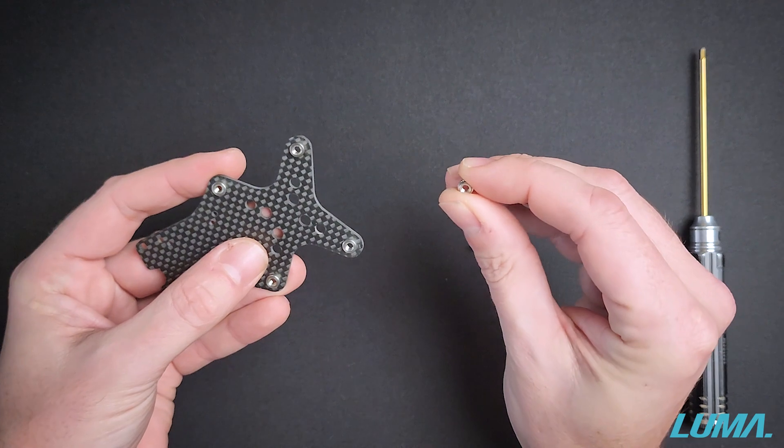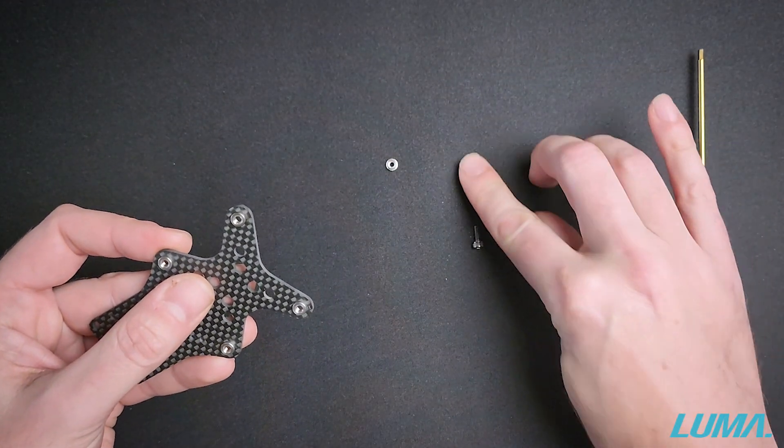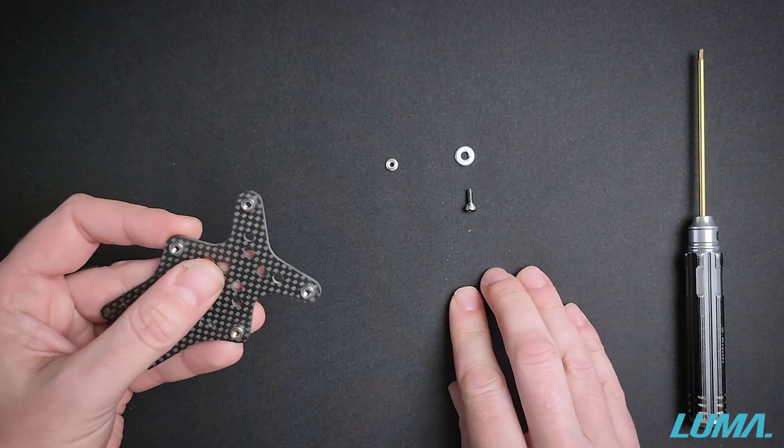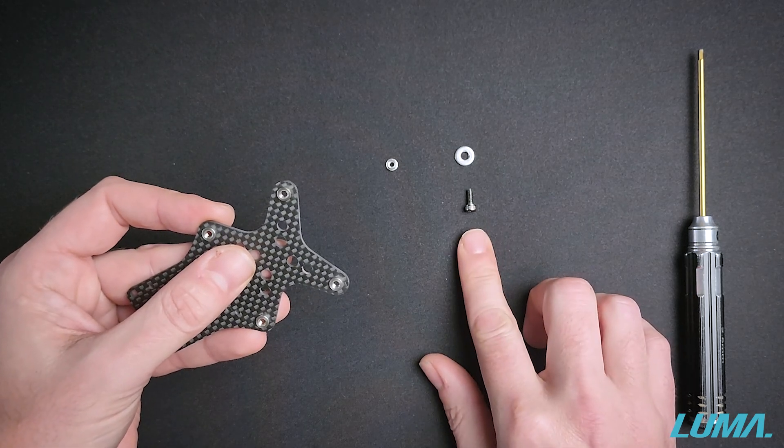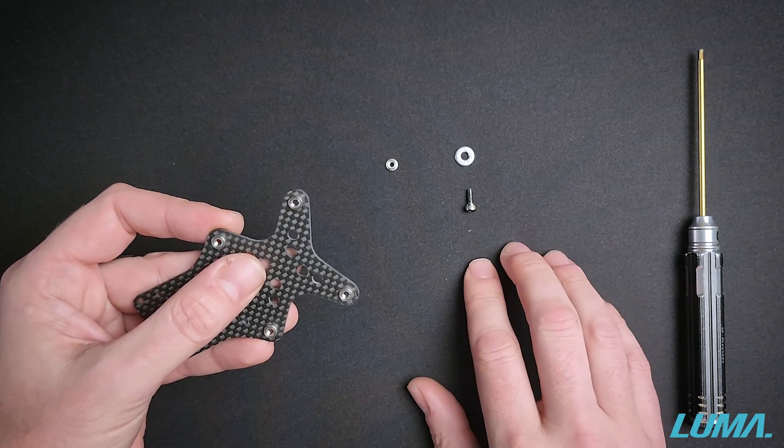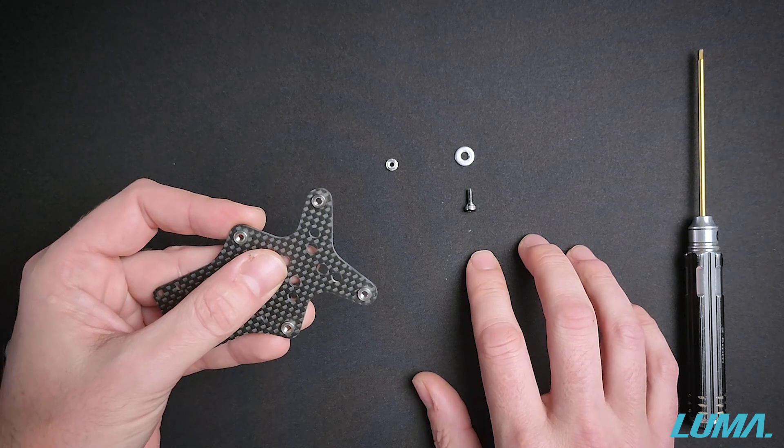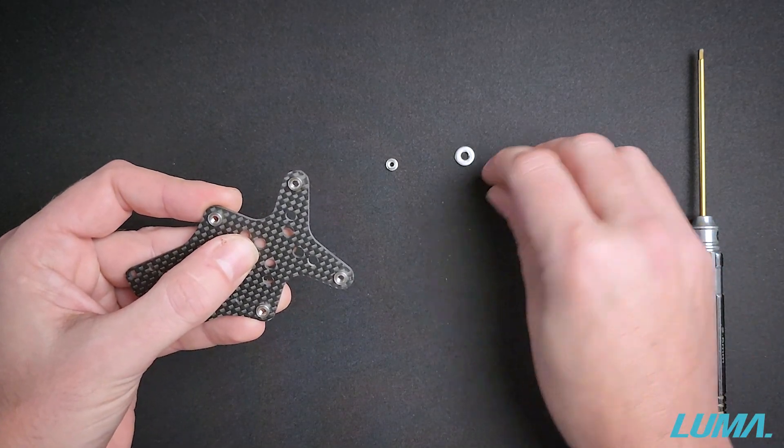So in order to do this you're going to need your plate obviously, the press nut, an M3 washer and also an M3 bolt. We recommend finding quite a short bolt. The smaller the bolt that you use, the less turns that will be required to install the press nut.